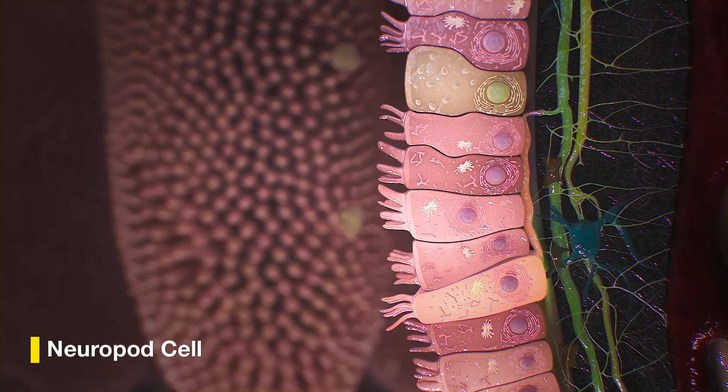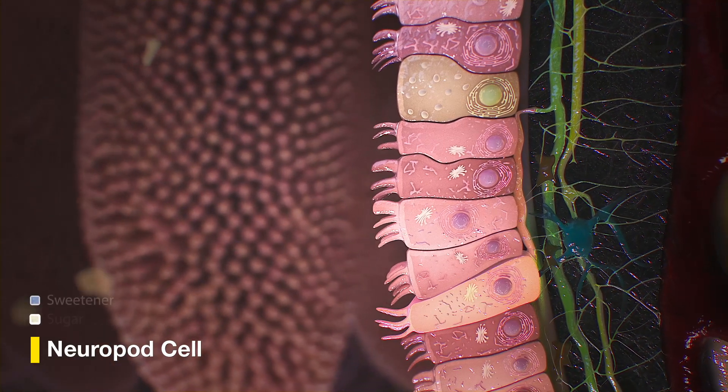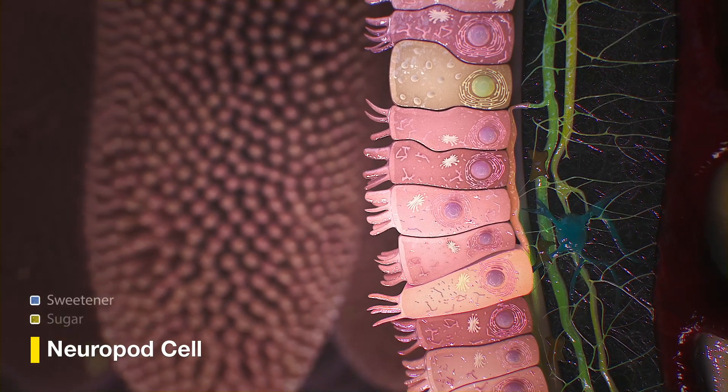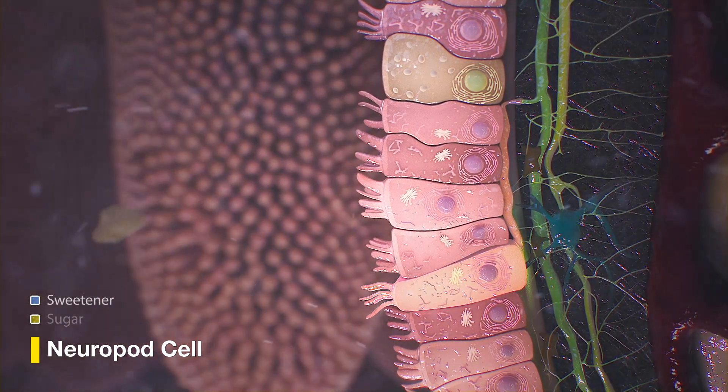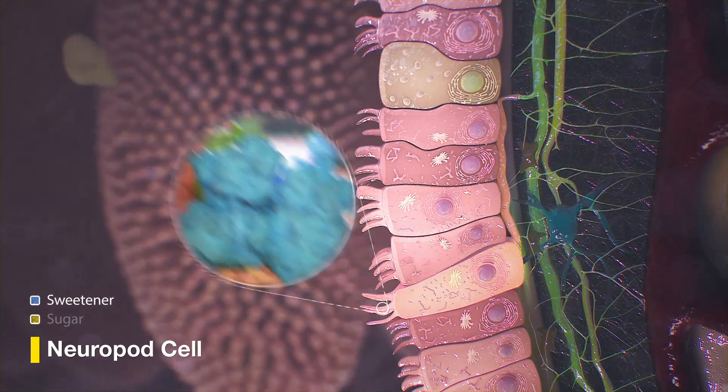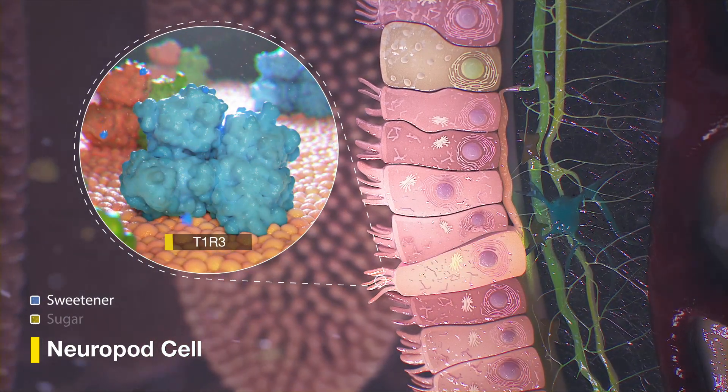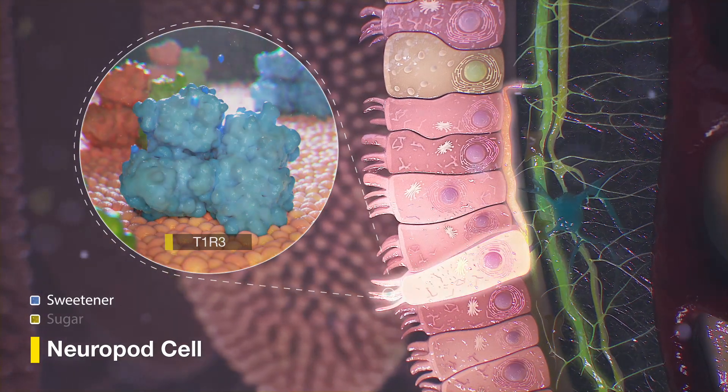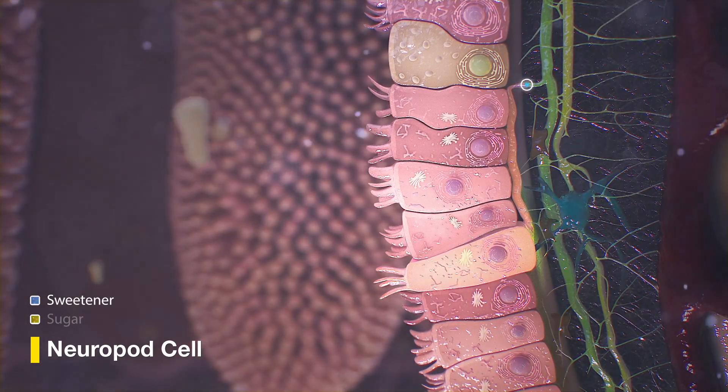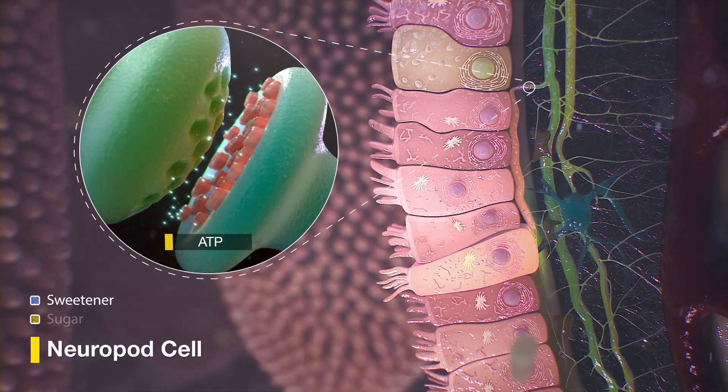We wondered if these cells are necessary to discern nutritive sugars from non-caloric sweeteners. We found that neuropod cells sense sweeteners using the sweet taste receptor T1R3. This causes the release of the neurotransmitter ATP.